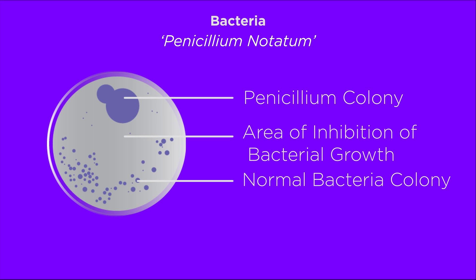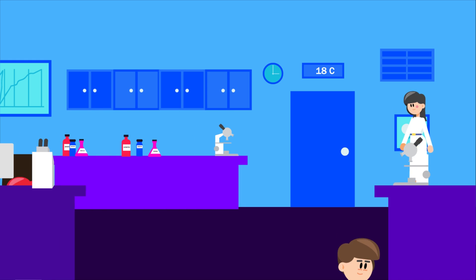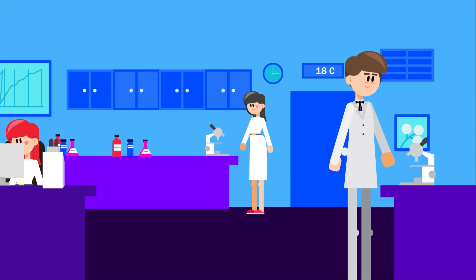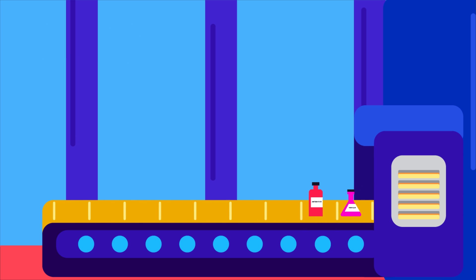Fleming named this active bacteria-killing substance penicillin. Other scientists then worked on penicillin further so that it could be produced as a drug. And by the 1940s, it was being mass-produced by pharmaceutical companies.